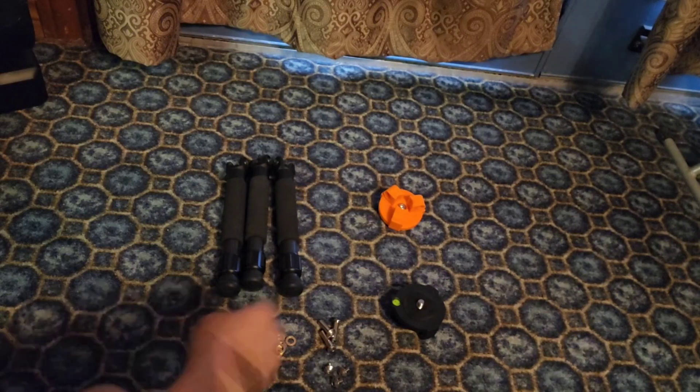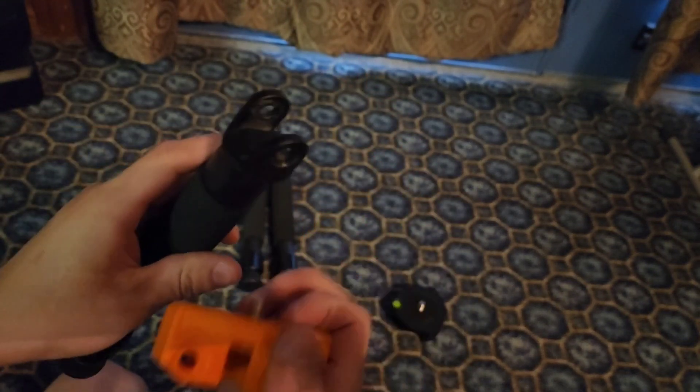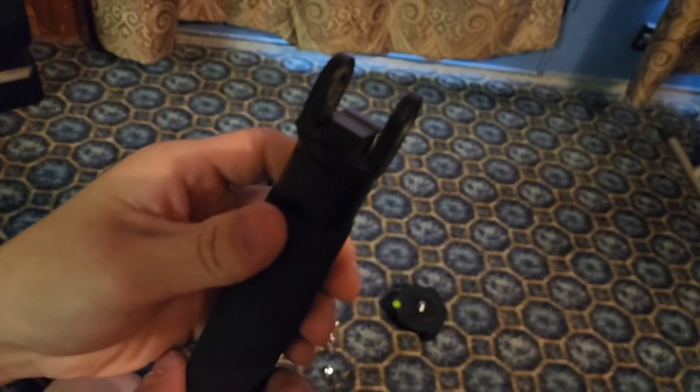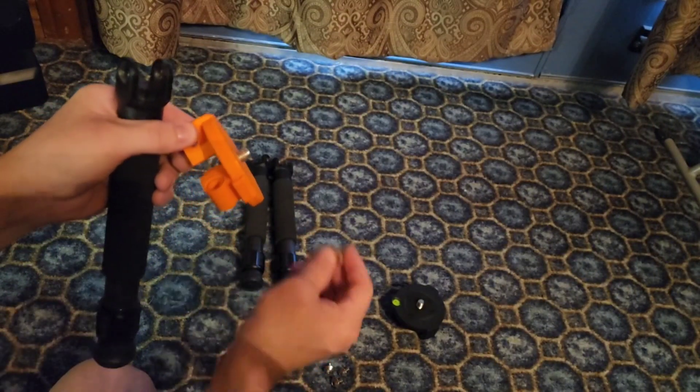Now grab the EQ adapter and one of the legs. If you look at the attachment point on the legs, you'll notice that one side is higher than the other. Be sure the space is outwards when installing the legs. If you don't do this, they won't fold properly and they won't fit in the case.